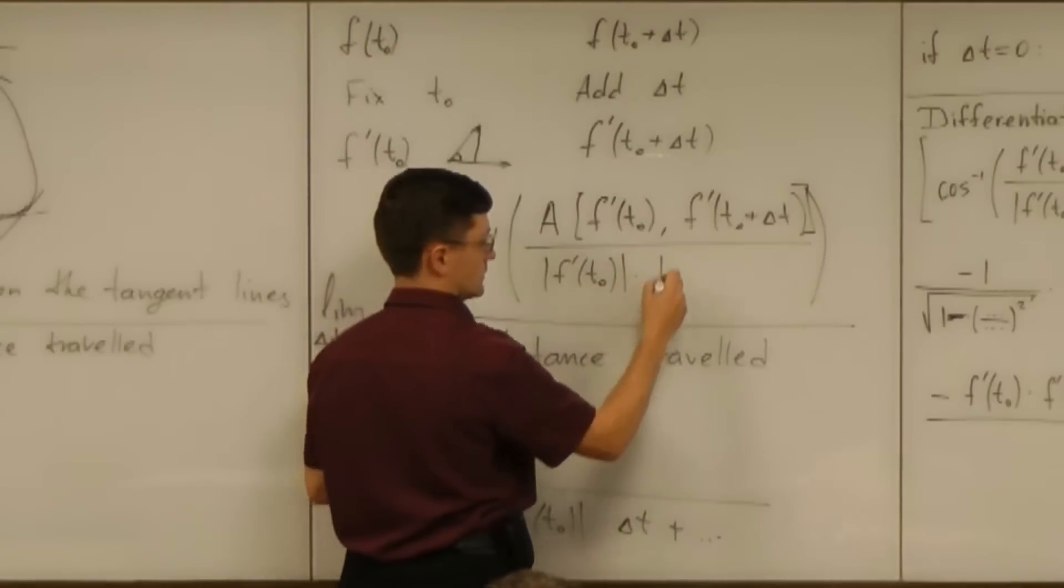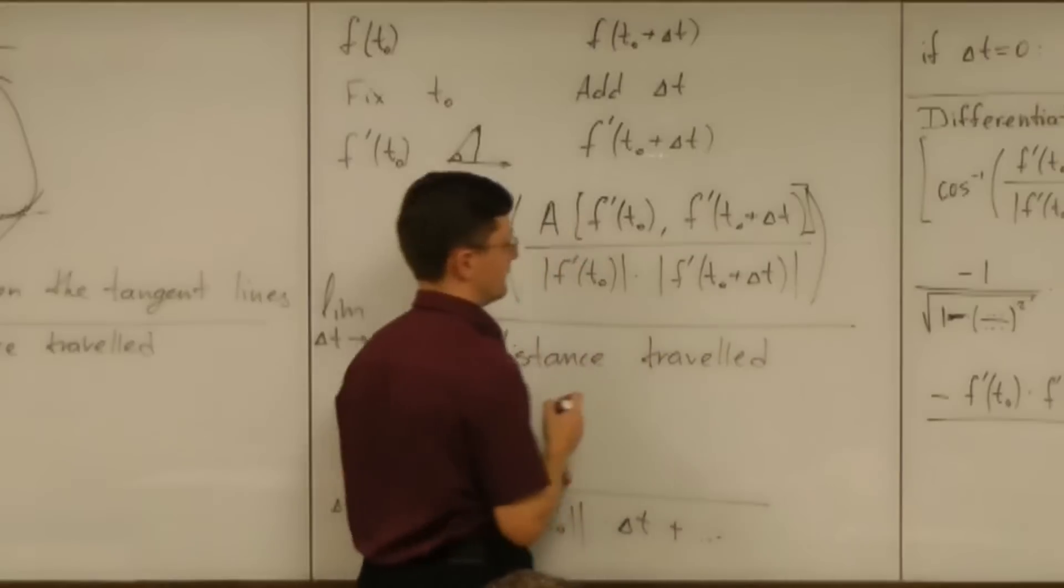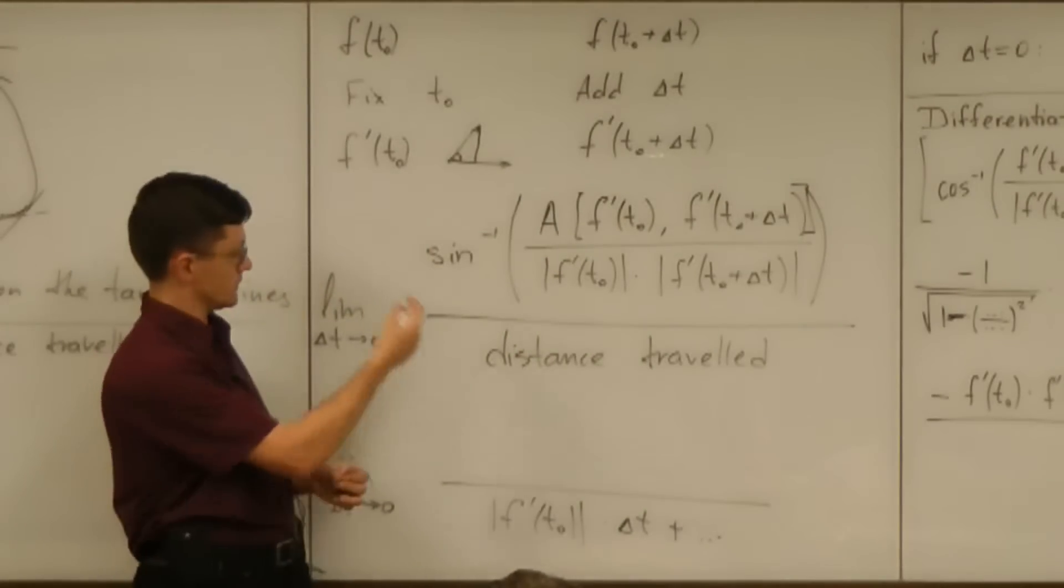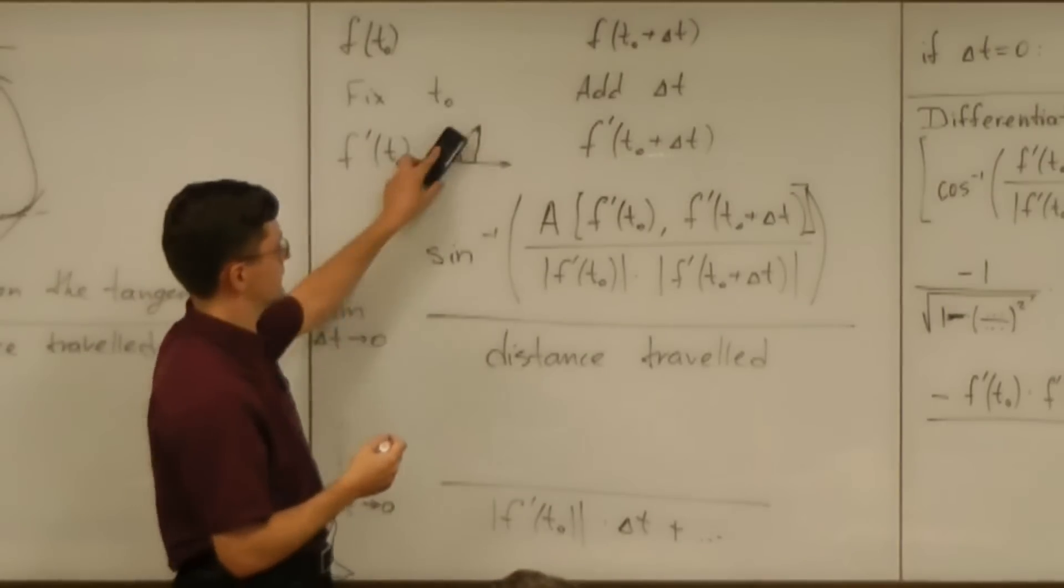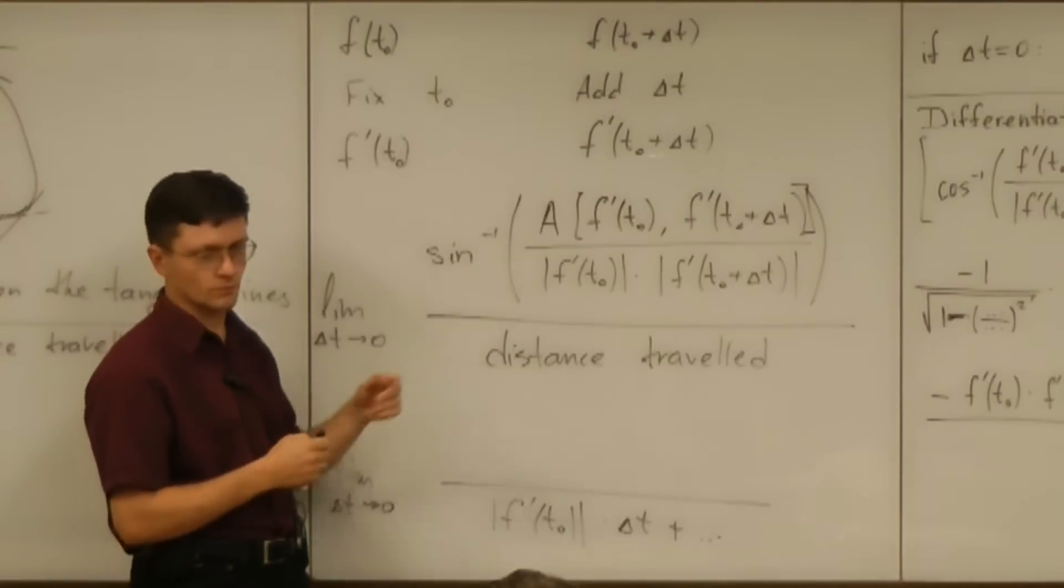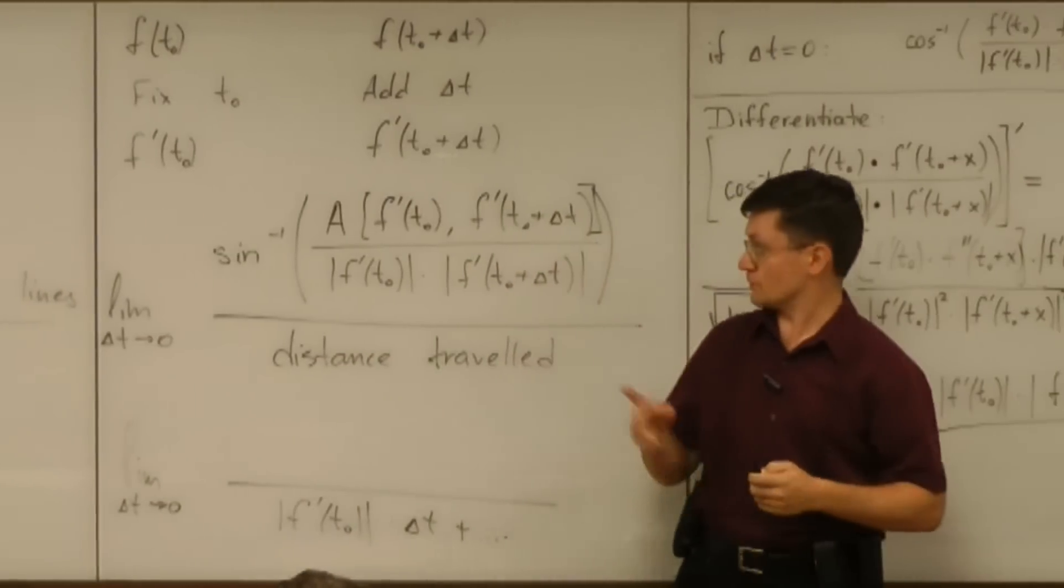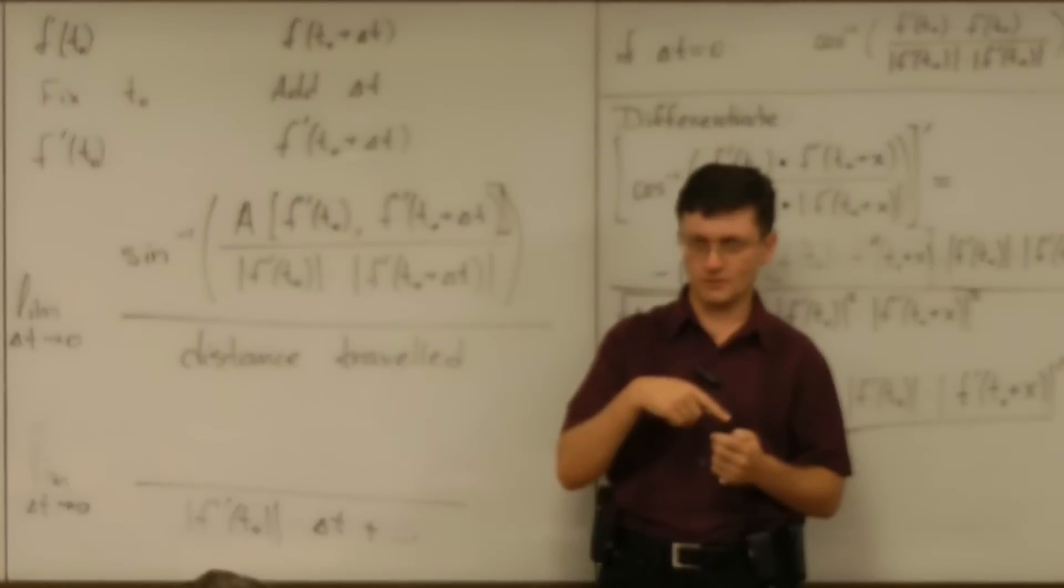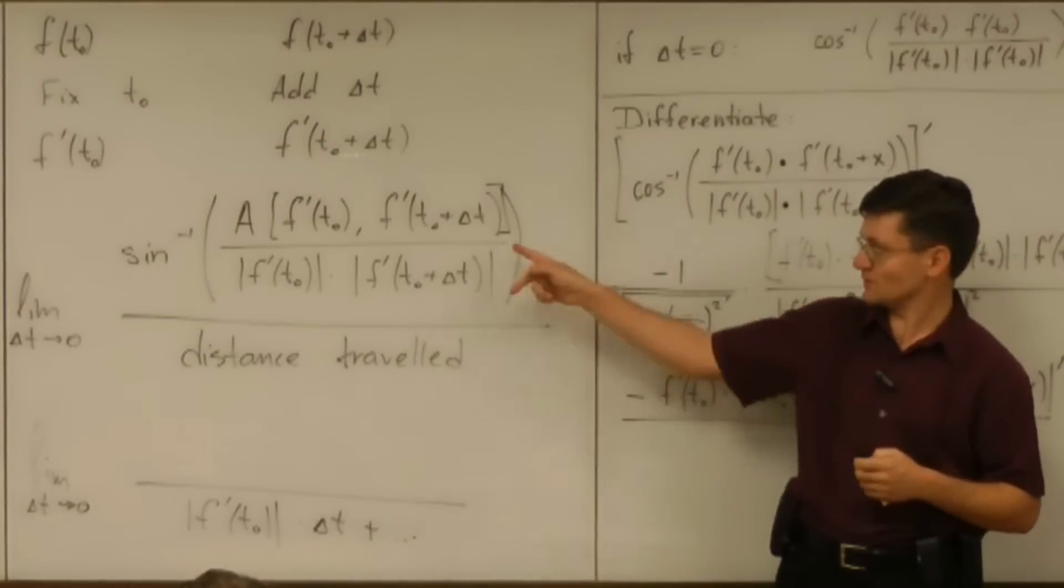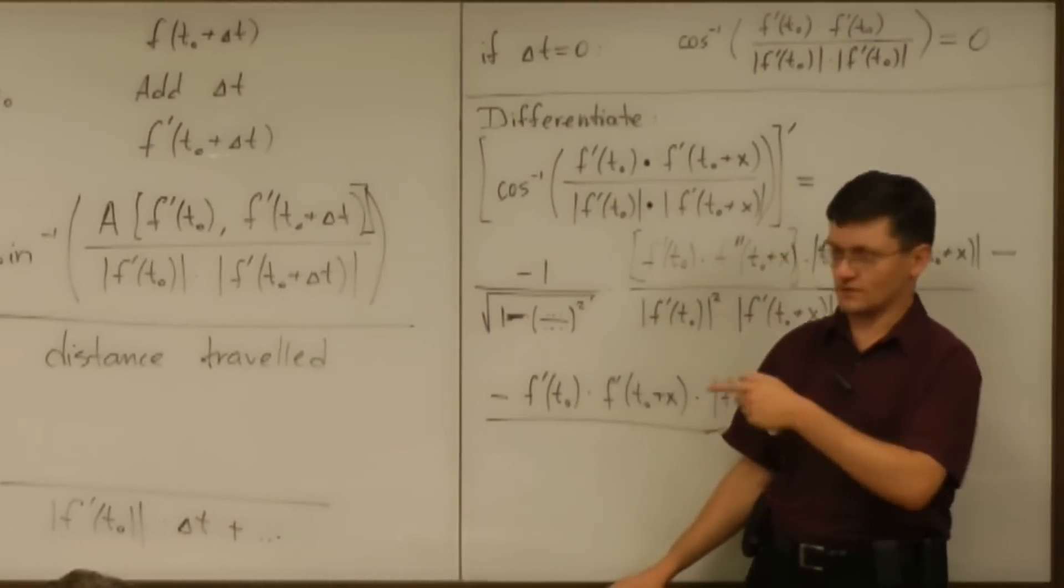So that area divided by the magnitude of f prime of t0 and also magnitude of f prime of t0 plus delta t, that's the sine. And now we can take sine inverse to get the angle. I mentioned that formula before, but probably only once. There was no essential reason to prefer this formula over the dot product formula until this moment.